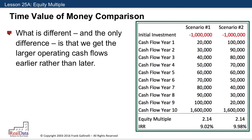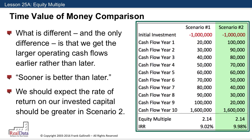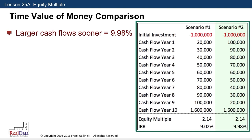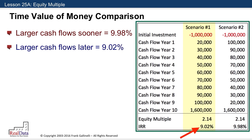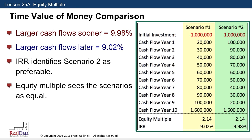As discussed in a previous lesson on the time value of money, sooner is better than later. So we should expect that the rate of return on our invested capital should be greater in this scenario, even if the total amount of our return is the same. And that's exactly what we see here. The scenario where we get the larger cash flows sooner yields an IRR of just about 10%, as opposed to 9% where the larger cash flows occur later. So the IRR correctly identified the second investment scenario as preferable — a better return on cash invested — while the equity multiple saw them as equal: a 2.14 multiple for each.